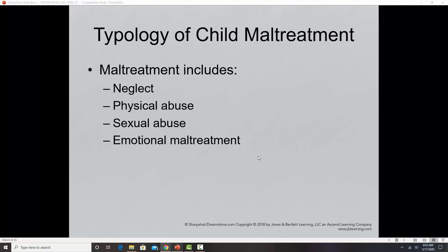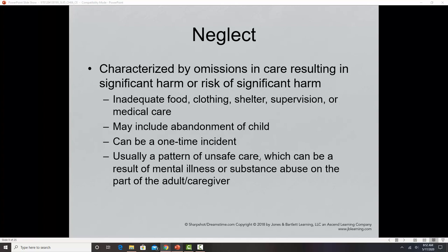Child neglect is the omission of care that results in significant harm. It can include inadequate food, clothing, shelter, supervision, medical care, and education, as well as abandoning a child. It can be a one-time incident, but there is usually a pattern of unsafe care or failing to provide the basic things children need — food, clothing, shelter, supervision, and medical care. There is a chart on page 211 of your textbook listing possible signs of child neglect.